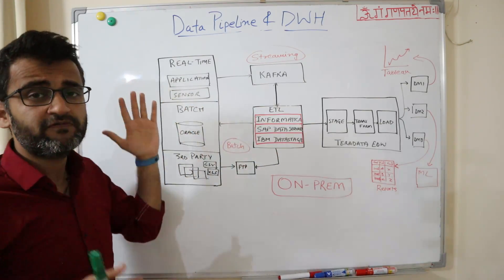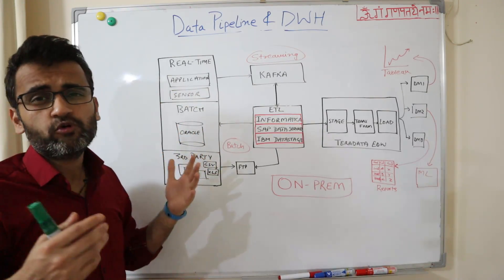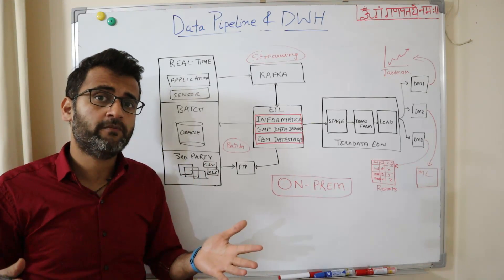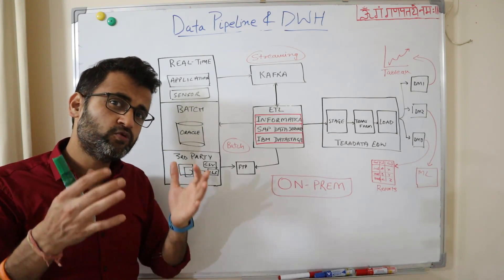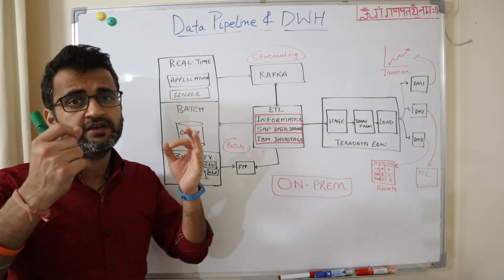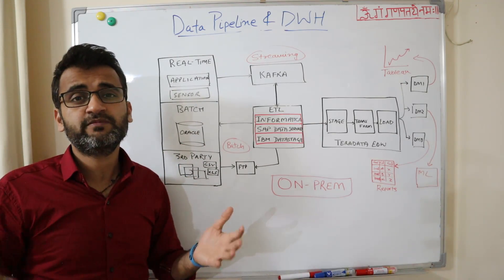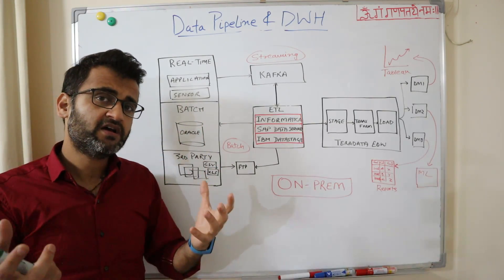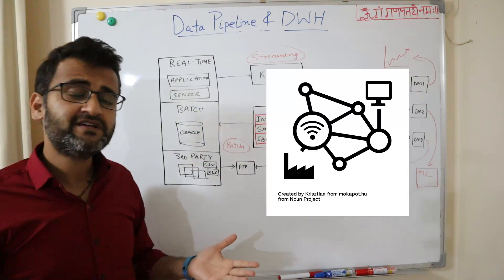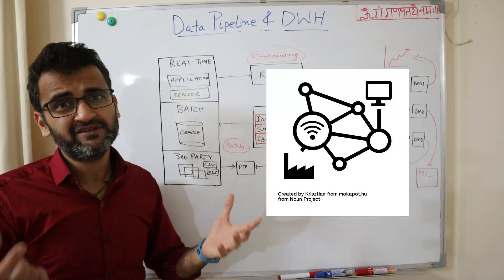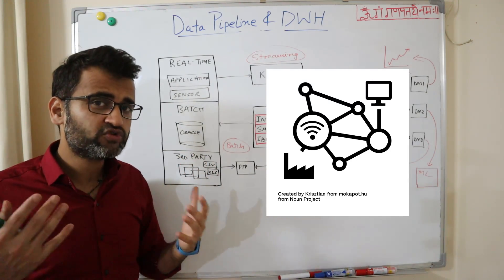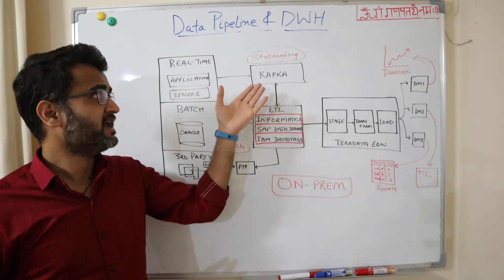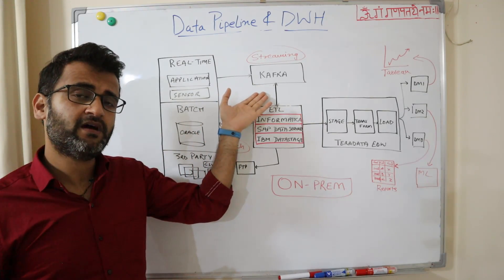An example of real-time data: suppose there is a front-end application that tracks user registration on your platform. As soon as a new user signs up and creates a login, an event needs to be triggered. These events could be countless because there could be millions of users coming to your website. Similarly, IoT sensor devices generating data every second also produce this kind of real-time streaming data.